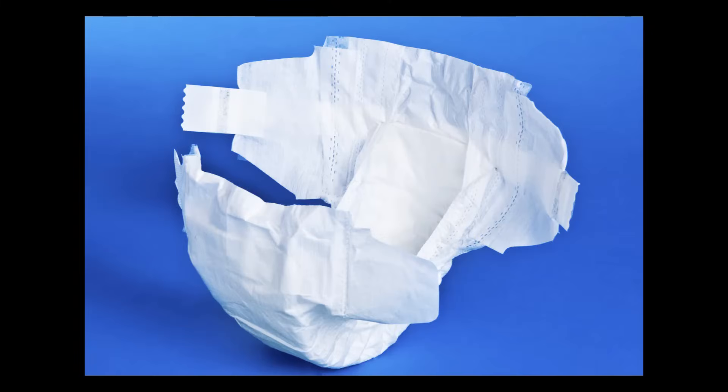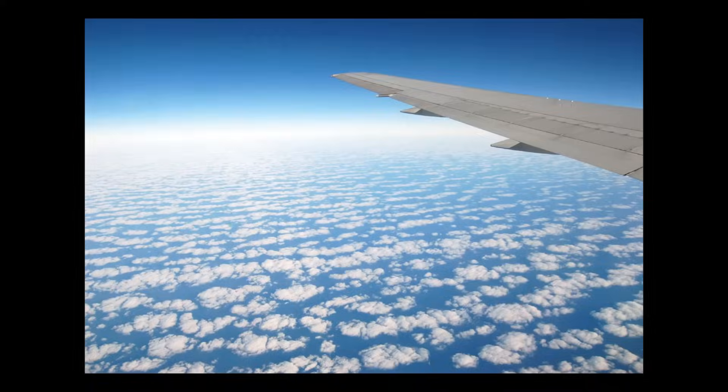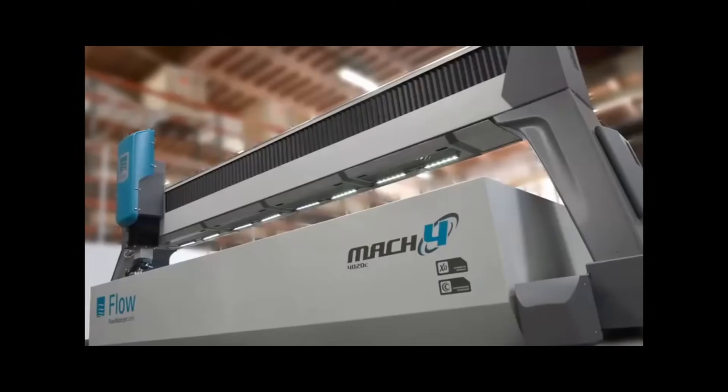From baby carrots to baby diapers, basic steel to complex airline wings. Cut any material, any shape, with a Flow Water Jet.